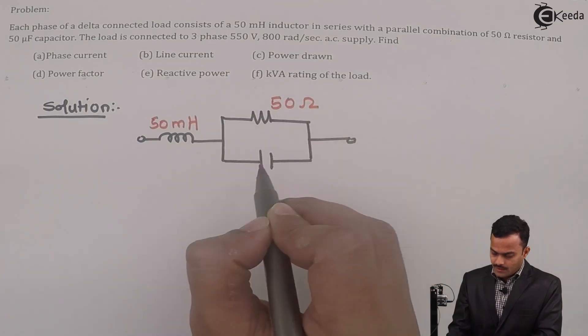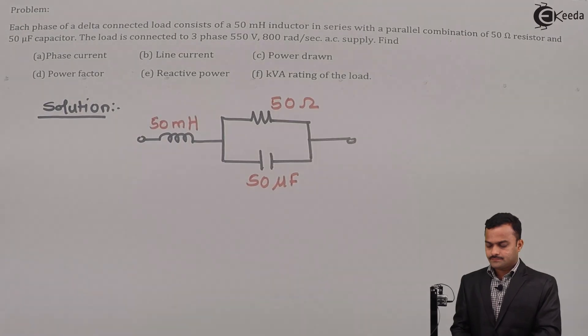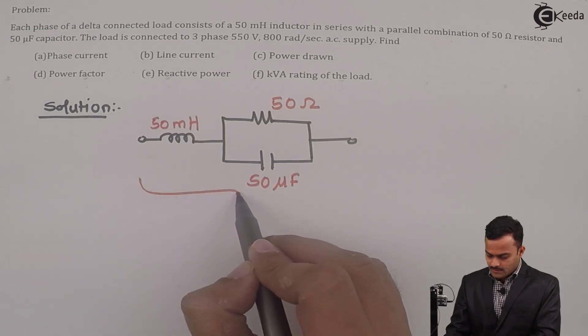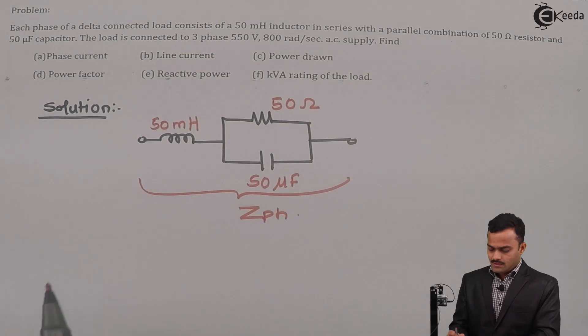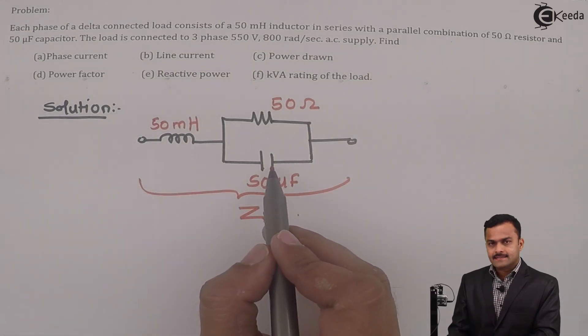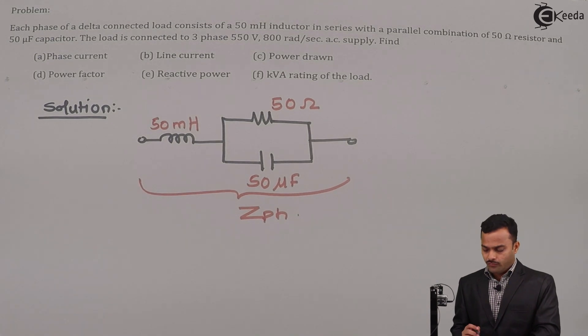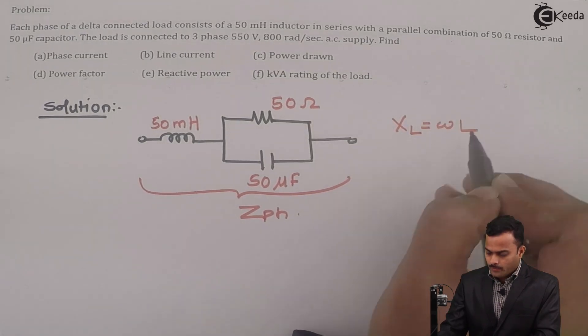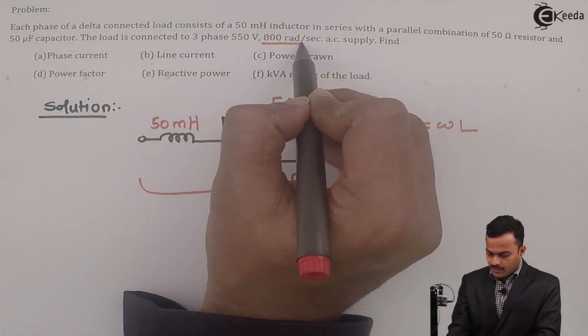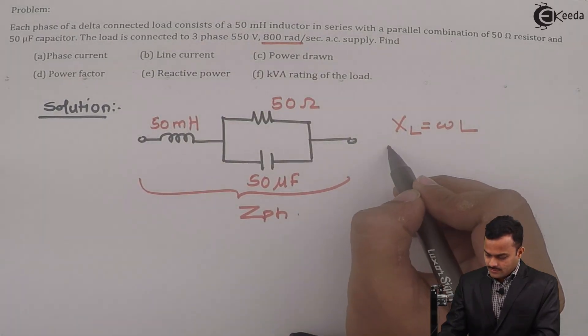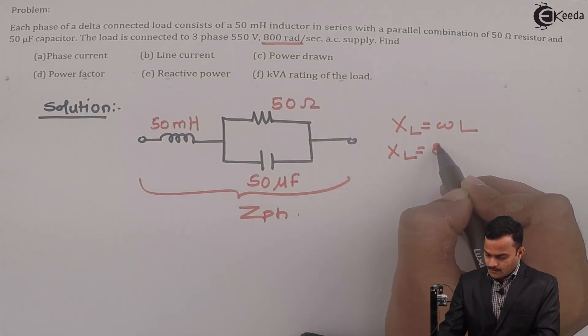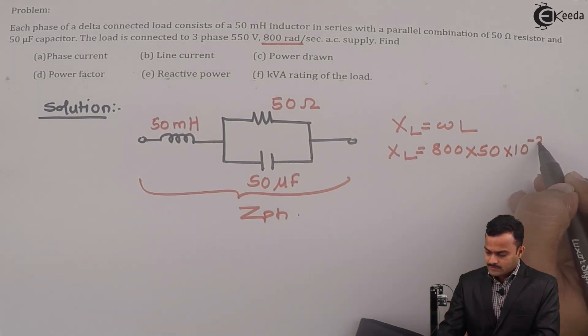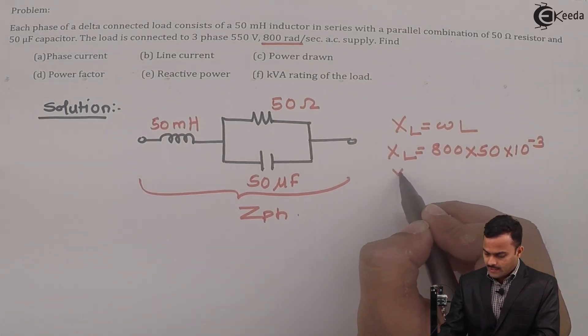The first job, let's calculate ZPH for this load. For that I should know what is XL and XC. So let's calculate XL and XC first. XL is omega L because they have given omega 800 radian per second, so XL will become 800 multiplied by 50 times 10 raise to minus 3. If you solve you will get XL equal to 40 ohm.